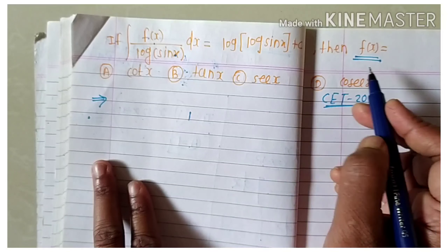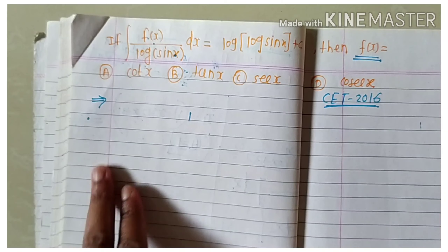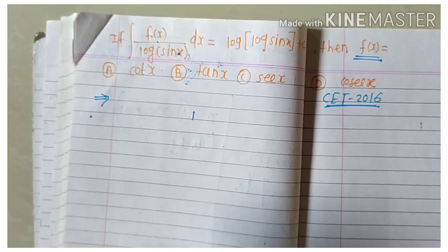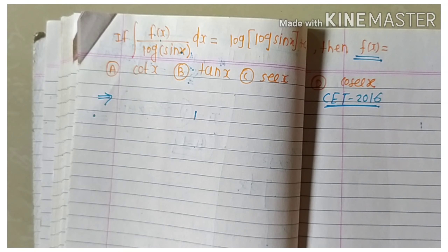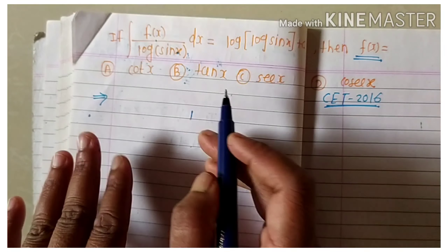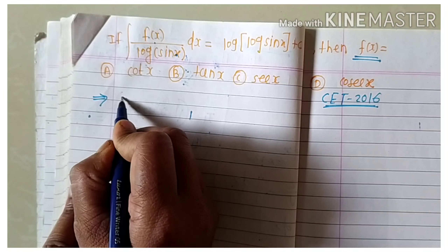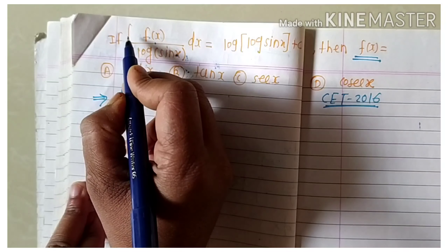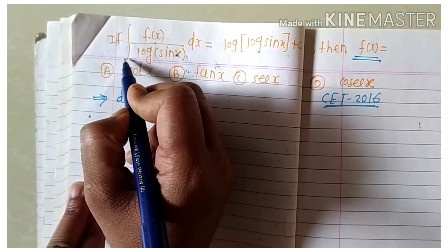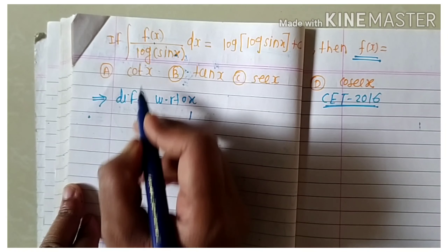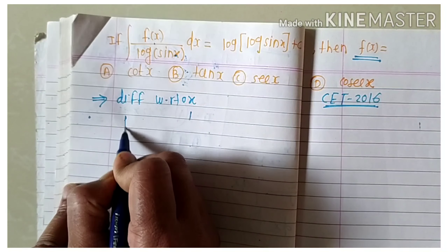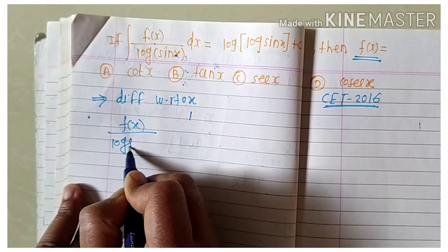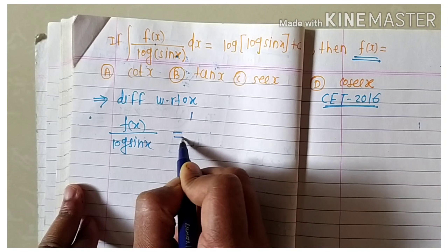Always remember: if we are given a left hand side integration and the right hand side is a logarithmic term, and some f(x) value is required, then always first differentiate both sides. After differentiating, we get directly whatever values are required. When we differentiate the left hand side, the differentiation and integration cancel each other.